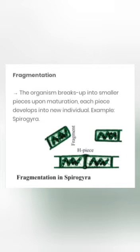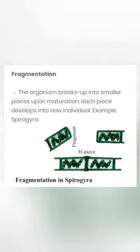Fragmentation. In this type of asexual reproduction, the organism breaks up into two or more smaller pieces upon maturation. Each piece develops into a new individual. For example, Spirogyra. In the picture, you can see the Spirogyra filament is broken into pieces. Each piece is known as a fragment, which develops into a new individual.